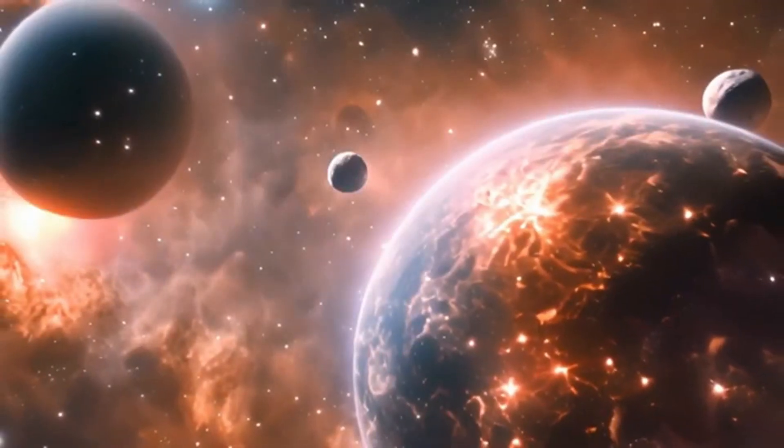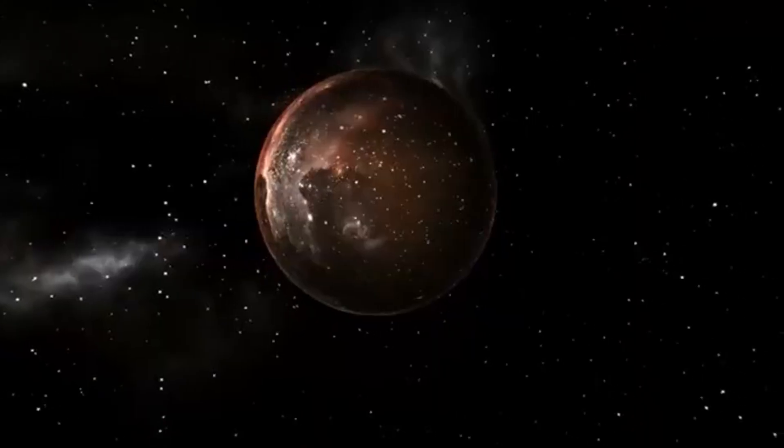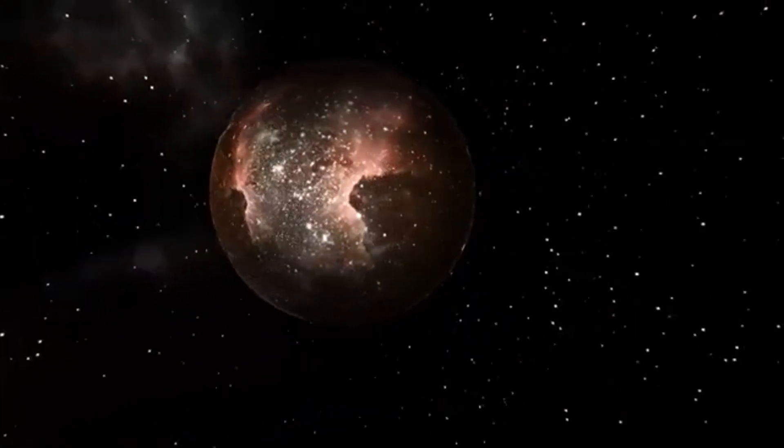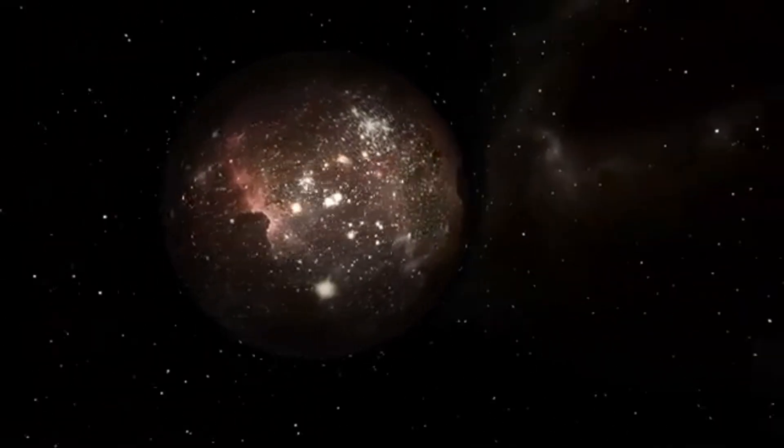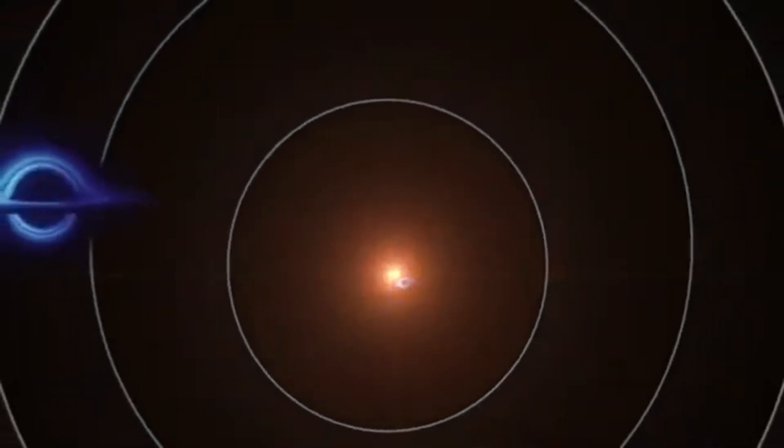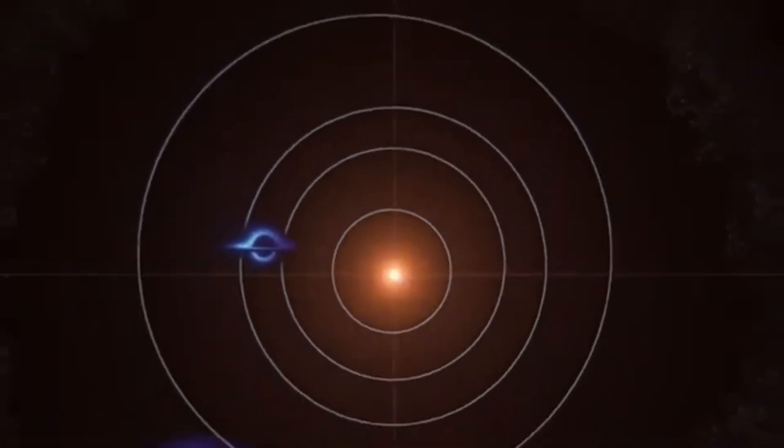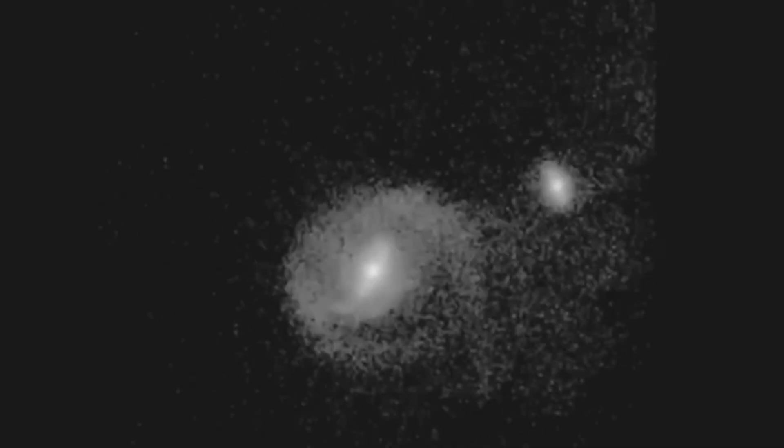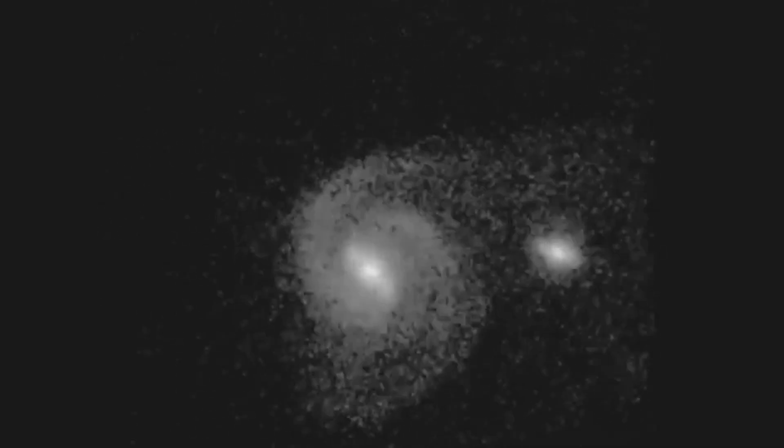Every great mystery begins with a flaw—a tiny fracture in the story we thought was unshakable. For decades, scientists treated the Big Bang as the ultimate beginning: neat, clean, absolute. But then came the whispers—subtle irregularities etched into the oldest light in existence, the cosmic microwave background. Then the James Webb telescope pushed the suspicion even further. Instead of confirming the flawless narrative, Webb returned snapshots of galaxies that simply shouldn't exist—galaxies too massive, too structured, too soon after the supposed birth of everything.